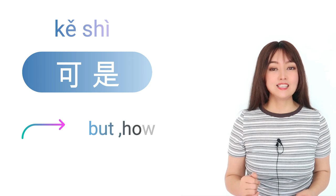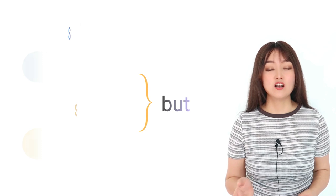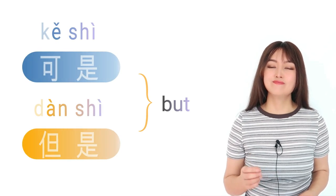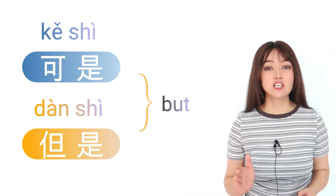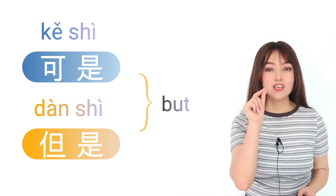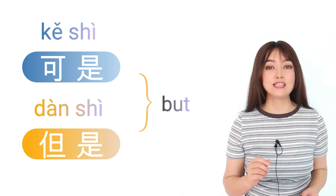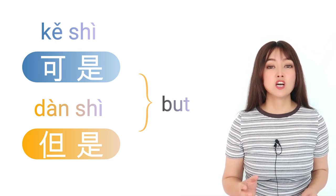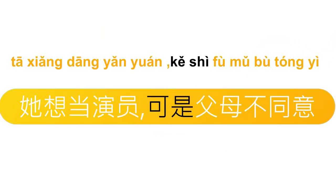下一个是可是，它的意思是 but。可是和但是差不多是一样的，almost the same. 可是比但是稍微弱一点。可是 is a little bit softer than 但是。她想当演员，可是父母不同意。